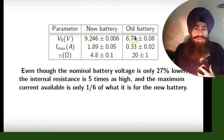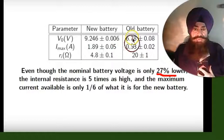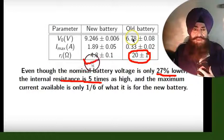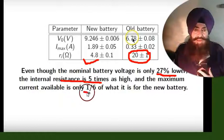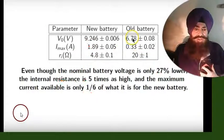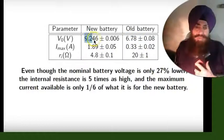Ultimately, the used battery's source voltage is 27% lower. The internal resistance is five times higher than the new battery's value. The maximum current is only one-sixth of the new battery's value. So there is a large change with the old battery, and the old battery is not good.